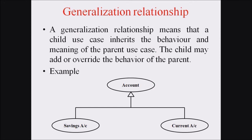The generalization relationship means that the child use case inherits the behavior of the parent. The child may add or override the behavior of the parent, and generalization is represented with a simple open triangle. For example, 'account' is shown as a use case, with two child use cases: savings account and current account. These child use cases inherit the properties of the base class 'account', and this is represented with an open triangle.